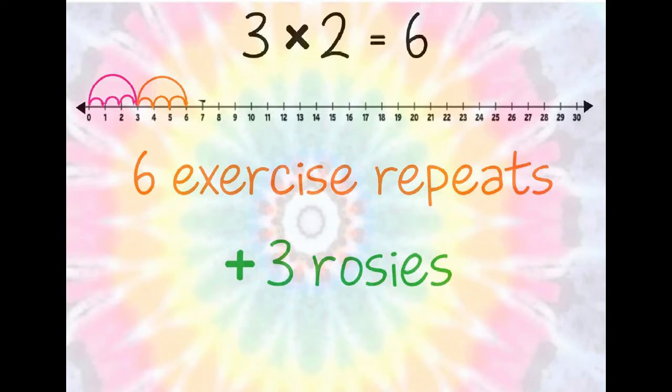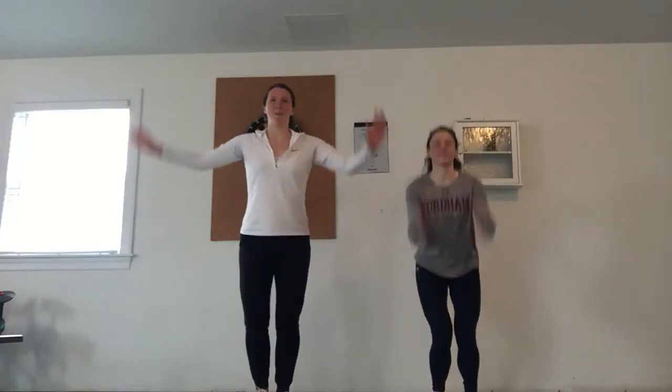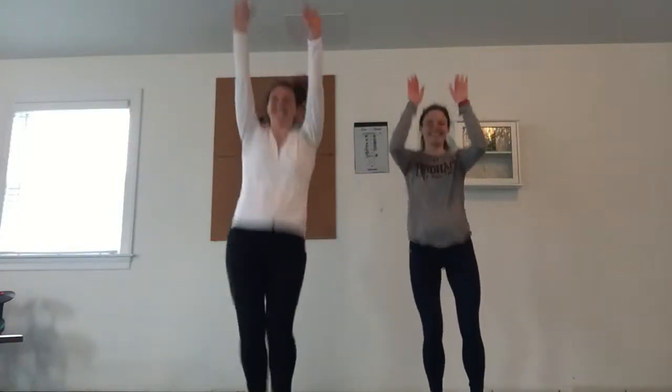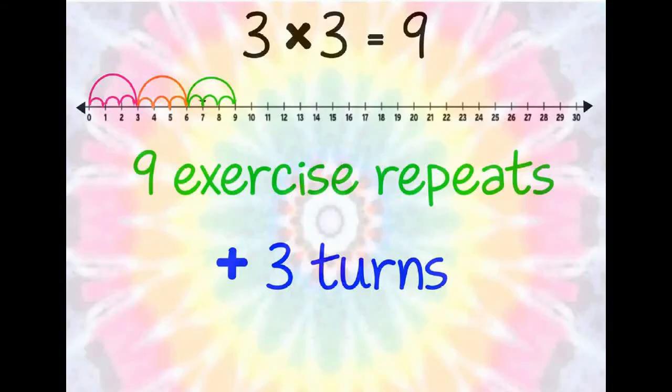We have completed 6 exercise repeats. Now we will add 3 Rosies. 3 times 3 is 9. We have completed 9 exercise repeats. Now we will add 3 turns.